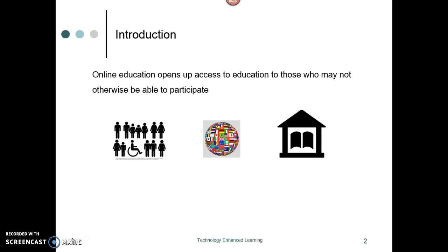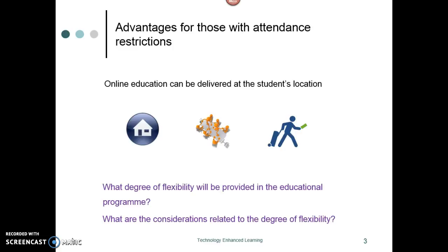If we firstly look at the issue of student location, online education can be delivered at home, in the workplace, and also to the employee who has to travel a lot on business. Typically this would be managers, for example, who would need education provided in a way that was flexible for location and could travel with them from one country to another.